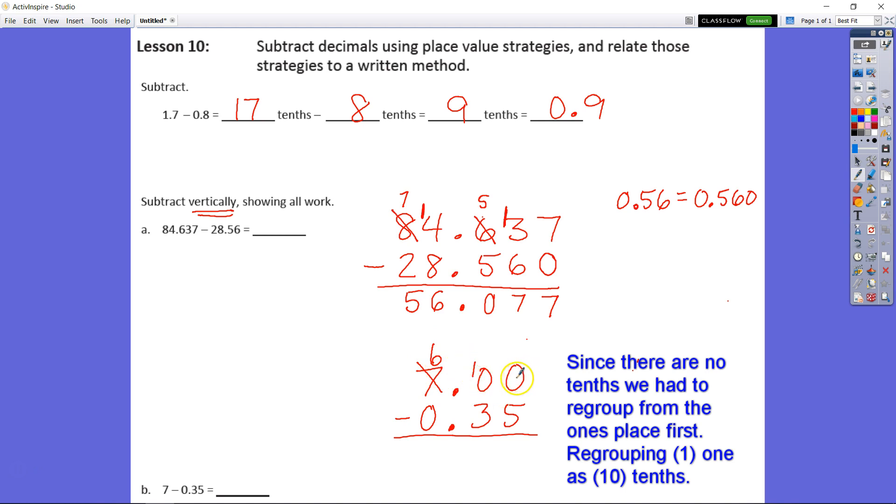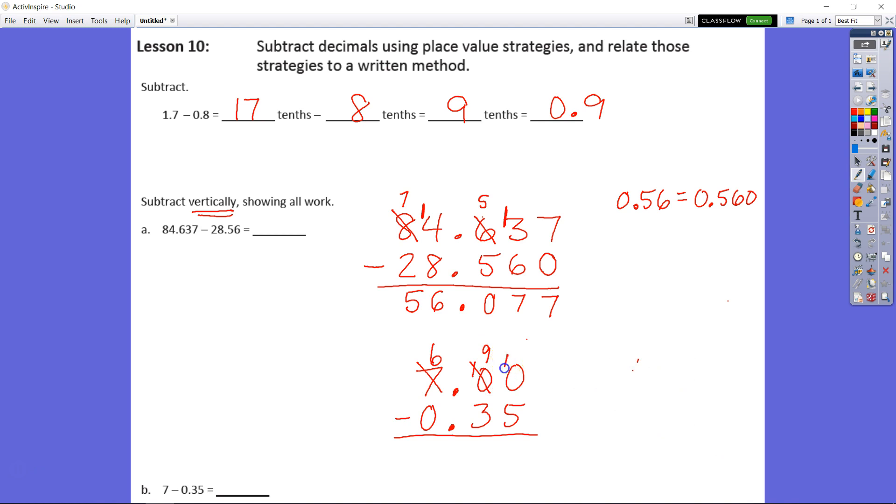Then we say well we still need to get back to our hundredths so we're going to take one of those tenths. Now we have 9 tenths remaining. We're going to take the 1 tenth and regroup it as 10 hundredths. Now we have 10 minus 5 equals 5 and we have 9 tenths minus 3 tenths is 6 tenths and we have 6 wholes minus 0 wholes equals 6.